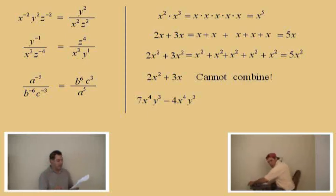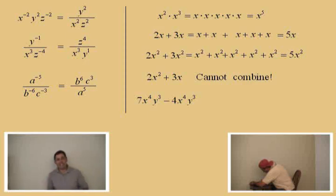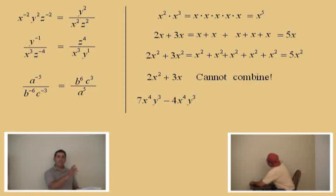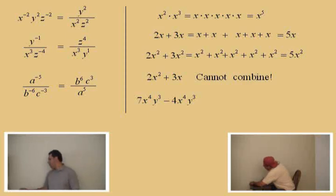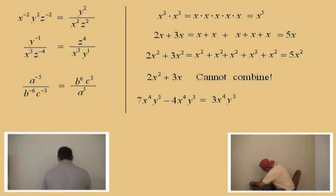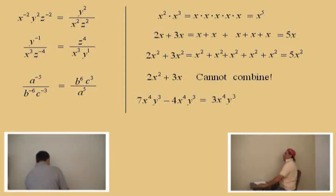Subtract four x to the fourth y cubed — it's basically like doing a basic arithmetic problem. Seven subtract four is three, and seven x to the fourth y cubed take away four x to the fourth y cubed leaves you with how many left, Charlie? Three of them. So that's three x to the fourth y cubed. Very nice, Charlie.